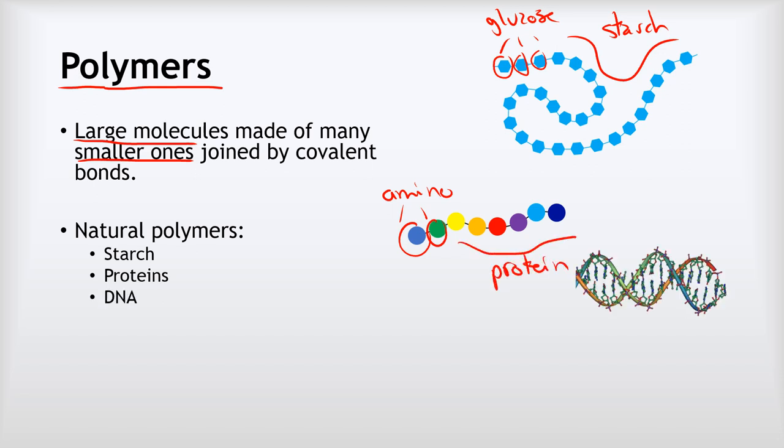And lastly, we've got DNA as well. DNA is made of individual units like that, that we call nucleotides, joining together to form the large chain of DNA.